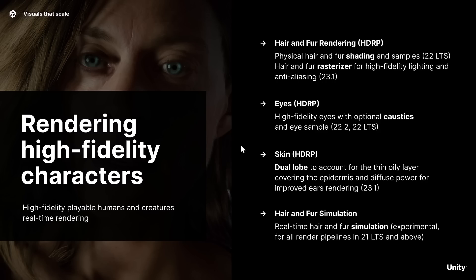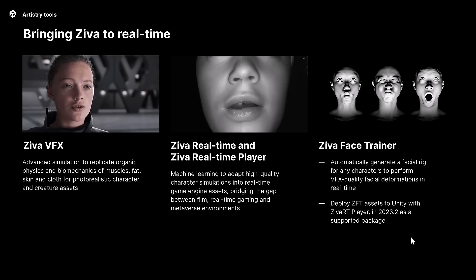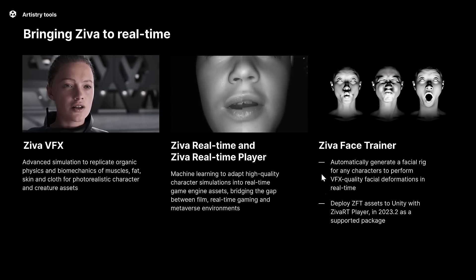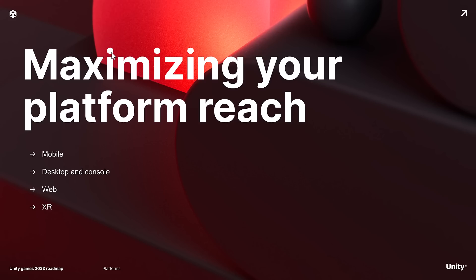On the characters side, Unity bought both Ziva and Weta. There was a demo for hair and fur shading released at the end of last year — available for download to see how it runs, with things like eyes and caustics. In 2023.1, you're getting dual-lobe skin to account for the thin oily layer covering the epidermis and diffuse power for improved ear rendering — very high-fidelity stuff. More Ziva tools are being brought to work in real-time, and in 2023.2 you'll be able to deploy ZFT assets to Unity with the Ziva RT player.